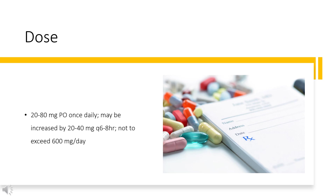Dosing — Edema: For edema associated with congestive heart failure (CHF), liver cirrhosis, and renal disease including nephrotic syndrome: 20–80 mg PO once daily, may be increased by 20–40 mg every 8 hours, not to exceed 600 mg per day. Alternative: 20–40 mg IV/IM once, may be increased by 20 mg every 2 hours (individual dose), not to exceed 200 mg per dose. Refractory CHF may necessitate larger doses.